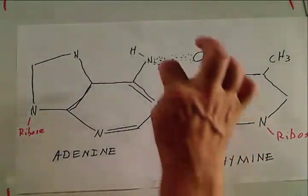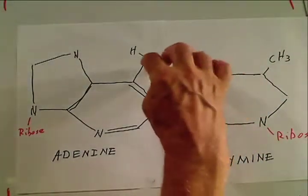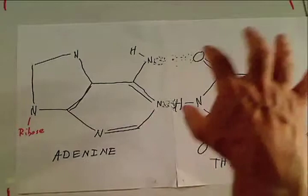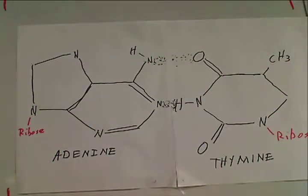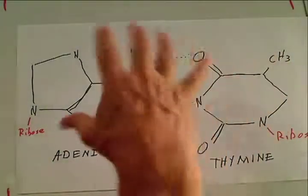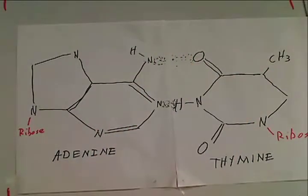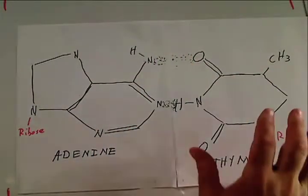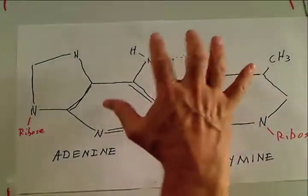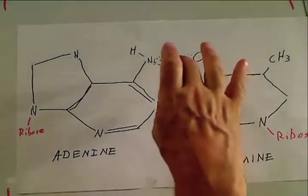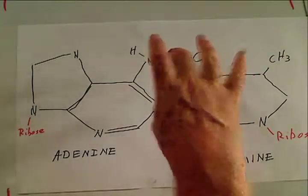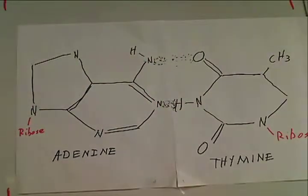The two hydrogen bonds between adenine and thymine are geometrically locked together. If this were twisted, these bonds would not be strong, but together they are stronger. Of course, DNA has a lot of these hydrogen bonds working cooperatively.